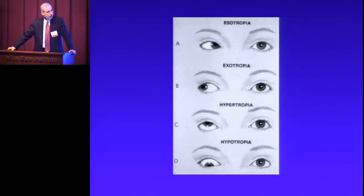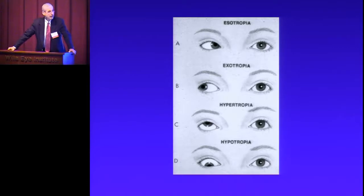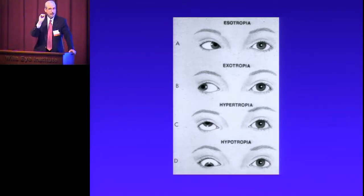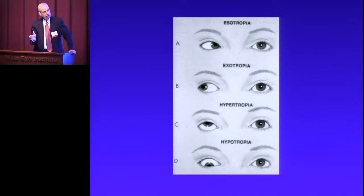Here are examples of esotropia and exotropia manifest deviations. In all of these examples, the left eye is focusing straight ahead, and the opposite eye has an eye that's turning in, turning out, elevating, or depressing.